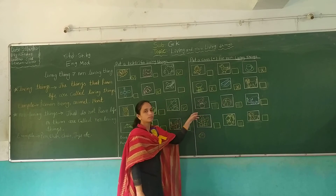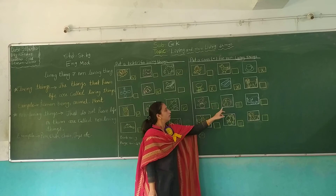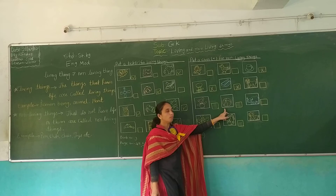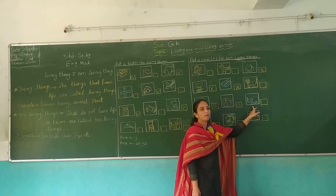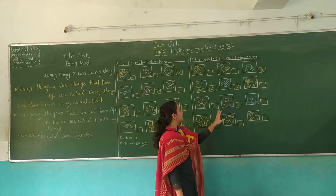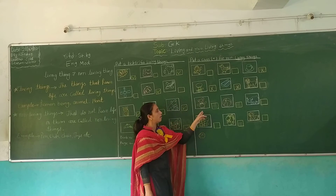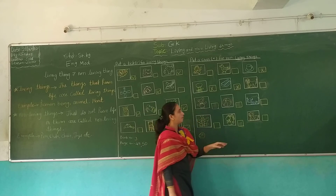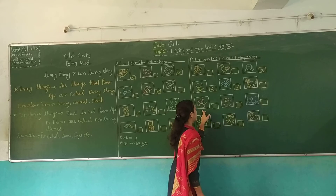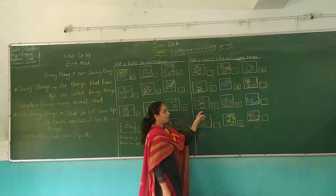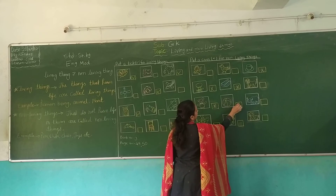And next, which picture is this? Teddy bear. Which picture is this? Buffalo. Buffalo is a living thing. Ball and teddy bear are non-living things — put a cross in their boxes.